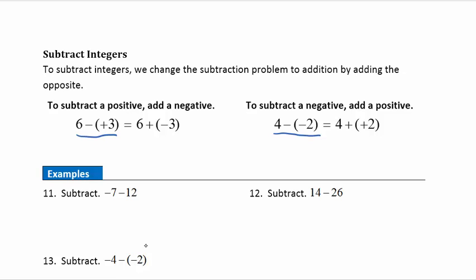Now let's look at examples of subtracting integers. Example eleven: change to an addition problem — negative seven stays the same, subtraction becomes addition, and minus positive twelve becomes plus negative twelve. Now we're adding same-sign numbers: negative seven plus negative twelve gives nineteen negatives, so the answer is negative nineteen.